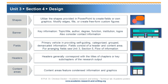Fields are the primary vehicle in providing self-guiding, categorized, grouped, and demarcated information. Fields consist of a header and content area. For arranging fields, see Unit 3, Section 5, Flow of Information. Headers generally correspond with the titles of chapters or key sub-chapters of the research output. Content areas feature condensed information and graphics.